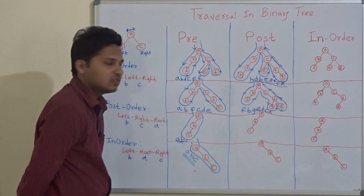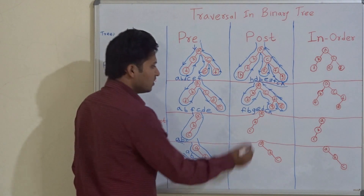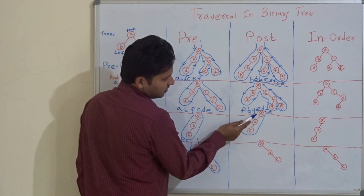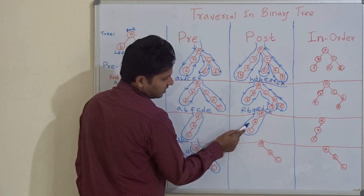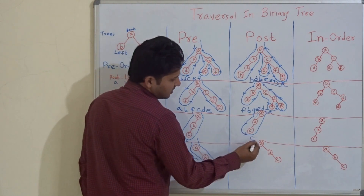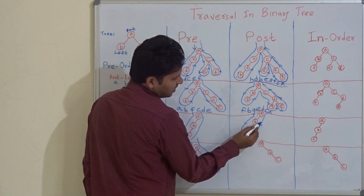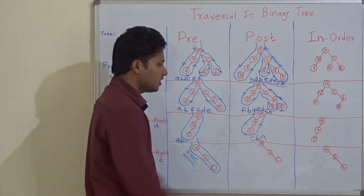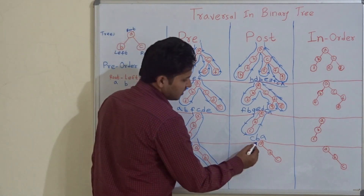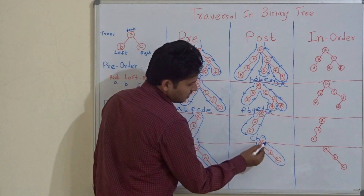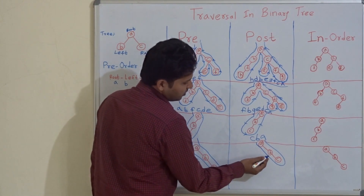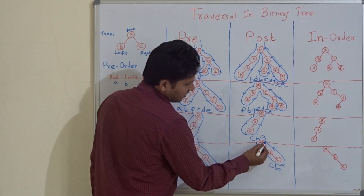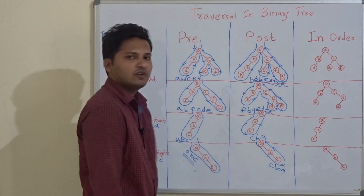For the next tree: A — not last visit. B — not last visit. C — yes, last visit, write C. B — yes, last visit, write B. A — yes, last visit, write A. Post-order: C, B, A. And for the last example: A — not last, B — not last, C — yes, write C. B — yes, write B. A — yes, write A. Post-order: C, B, A. This method is so simple you can write traversals without following technical rules.